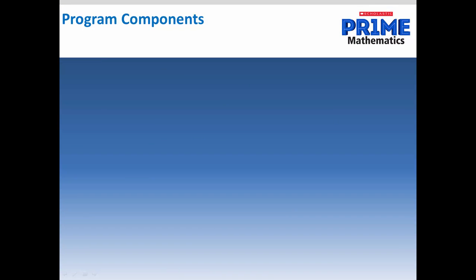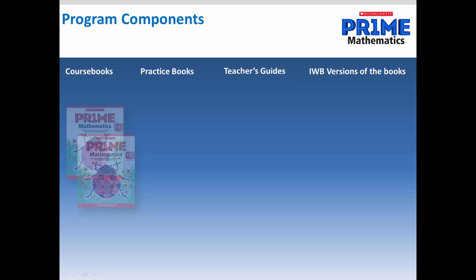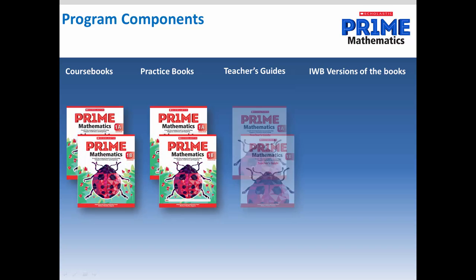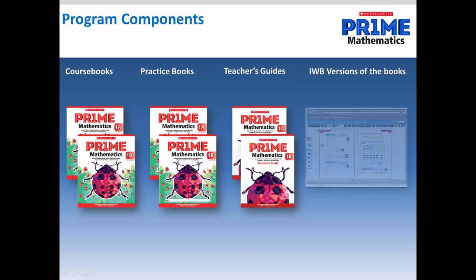There are four components to Prime mathematics. Each level consists of two course books, practice books, and teacher's guides, called A and B. And interactive whiteboard versions of the books are also available. Each book is approximately a semester's work.